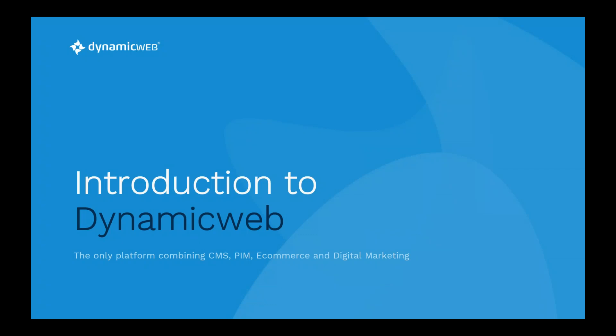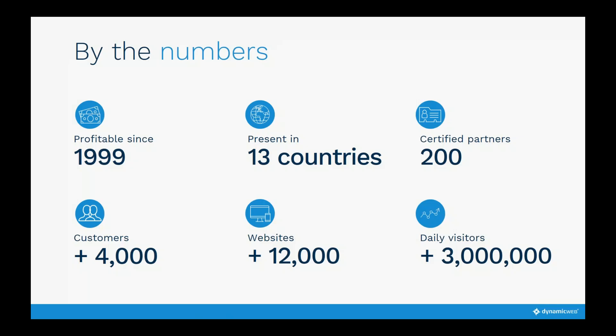Introduction to Dynamic Web. Dynamic Web is the only platform combining CMS, PIM, e-commerce, and digital marketing. The company has been profitable since 1999 and is now represented in more than 13 countries — the latest newcomers being Holland and Norway. With more than 200 certified partners around the world, the platform is well-known across Europe and globally. We have more than 4,000 — now closer to 5,000 — customers, with 12,000 websites, and we expect more than 3 million visitors on our platform daily.